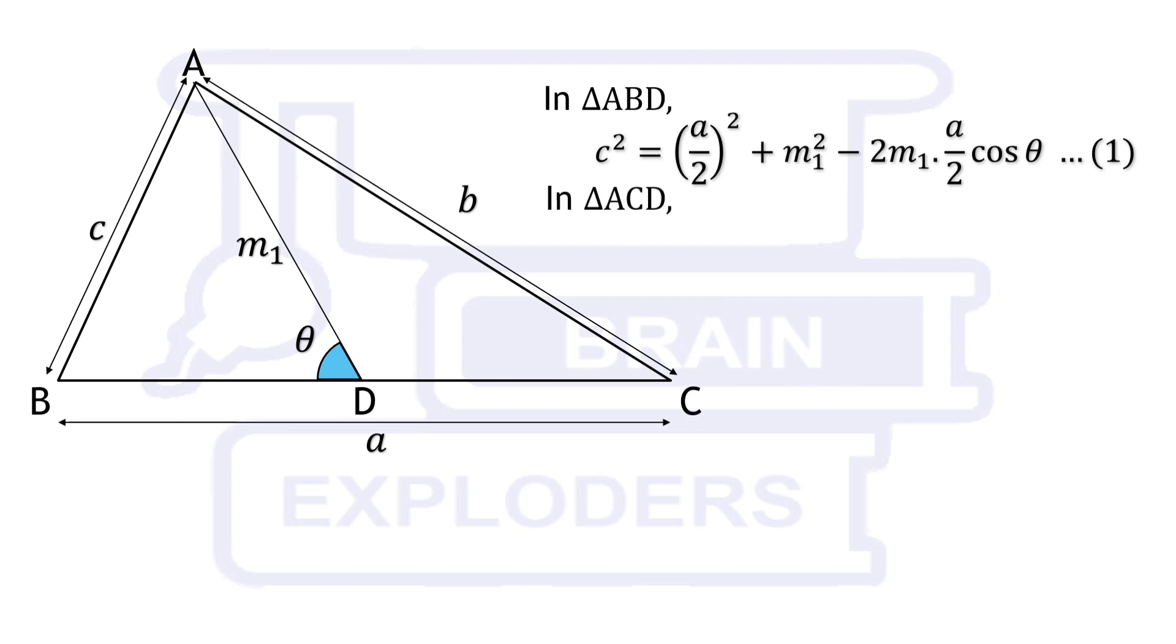Similarly, in triangle ACD, B squared is equal to A by 2 whole squared plus M1 squared minus 2M1 times A by 2 times cos 180 minus theta. It is because angle opposite to side AC is 180 minus theta.